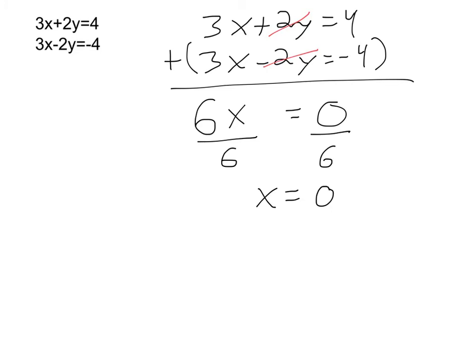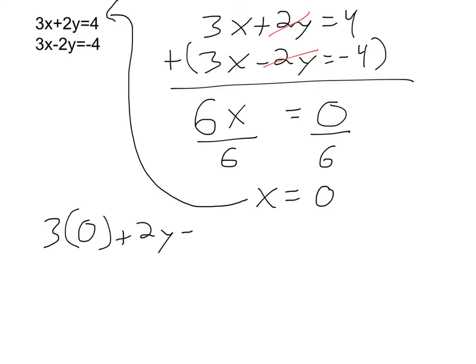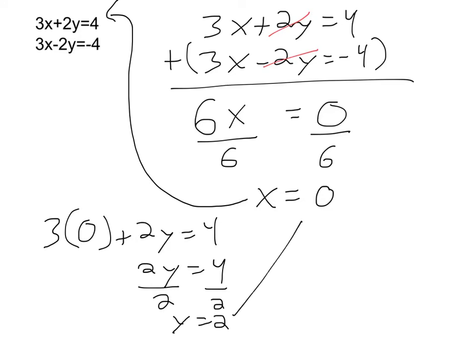Now I'm not quite finished. I need to take this value of x and plug it back into one of my original equations. They're both equally convenient, so I'll use the first: 3 times 0 plus 2y equals 4. 3 times 0 is 0, so I'm left with 2y equals 4. Dividing by 2, y equals 2. That combines with x equals 0 to give my final answer of (0, 2). Checking this ordered pair in both original equations shows it satisfies both, making it a solution to this system.